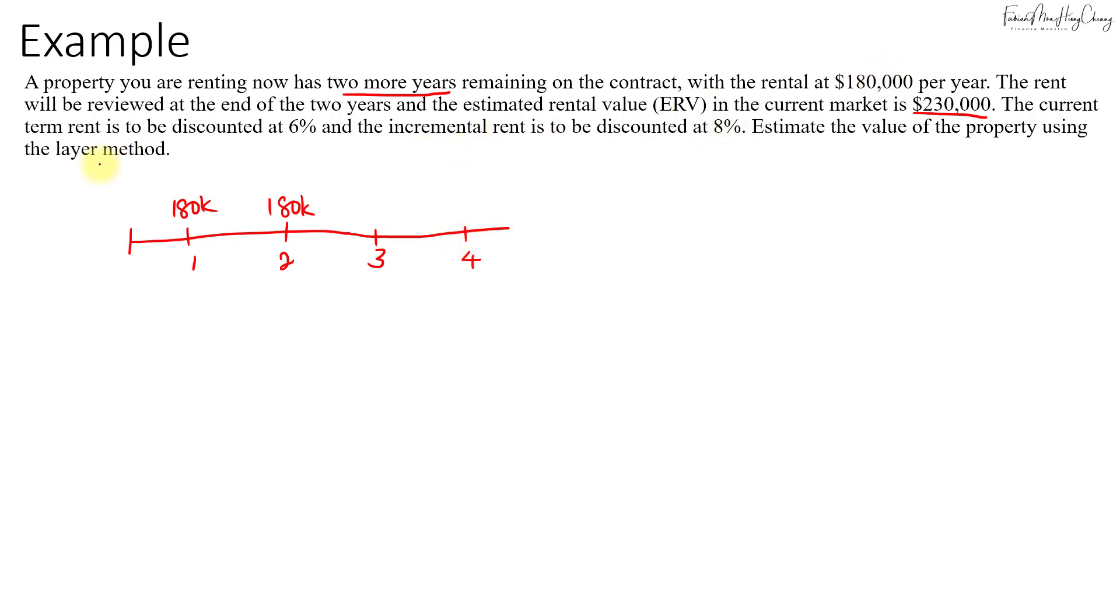Under the layer method, we'll be using a discount rate of 6% for the term rent, which is $180,000, and then the incremental rent will be discounted at 8%. We'll maintain the base rent or the term rent of $180,000 to perpetuity.